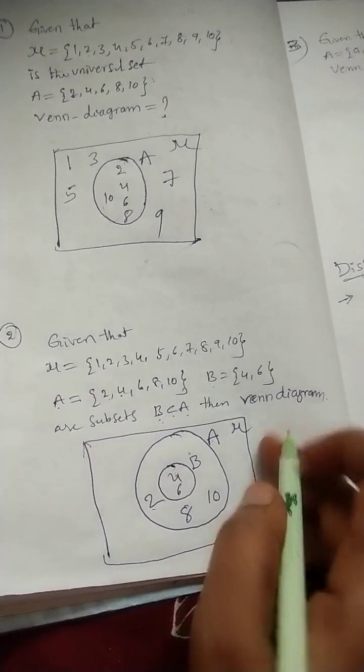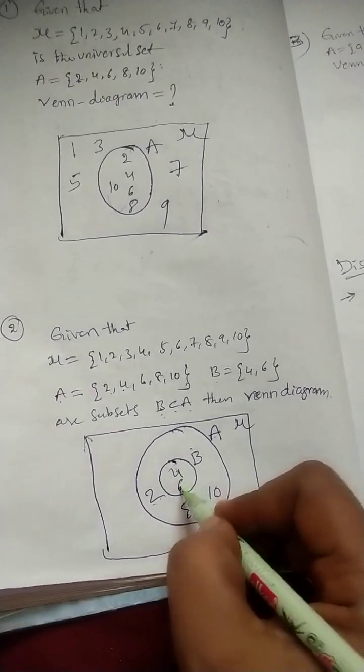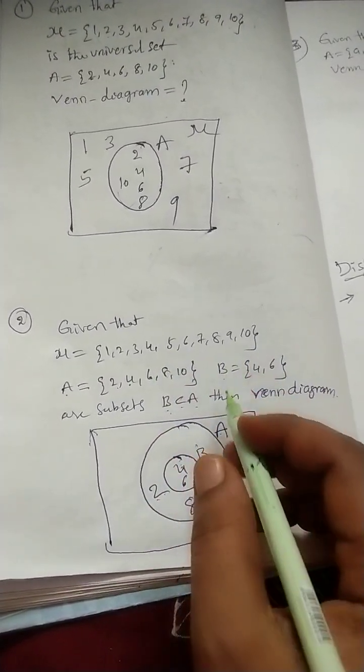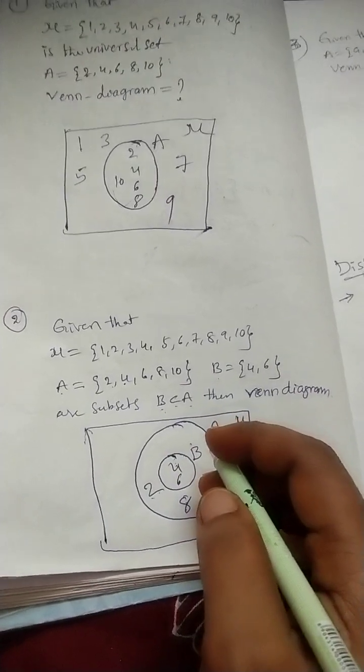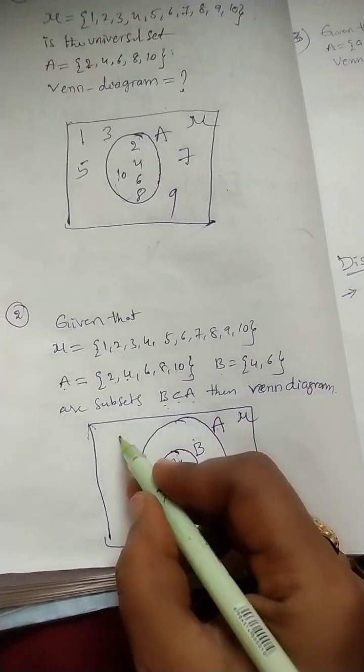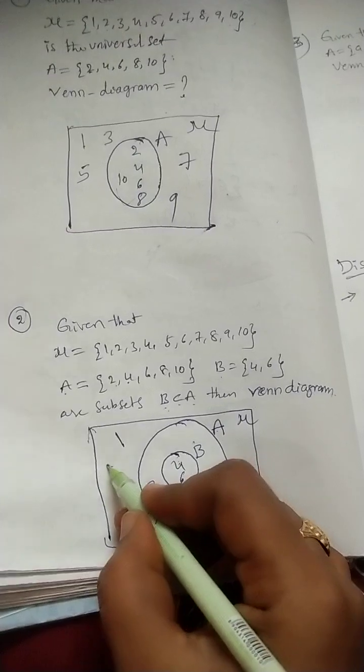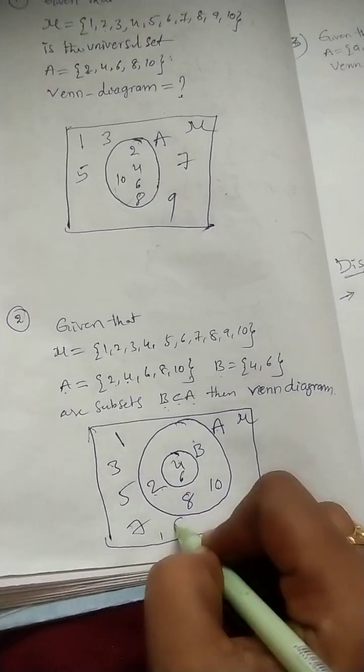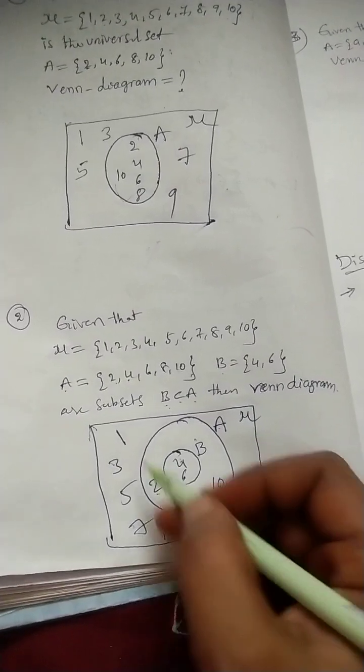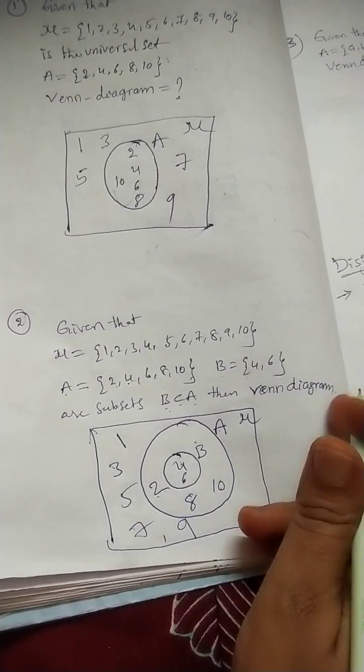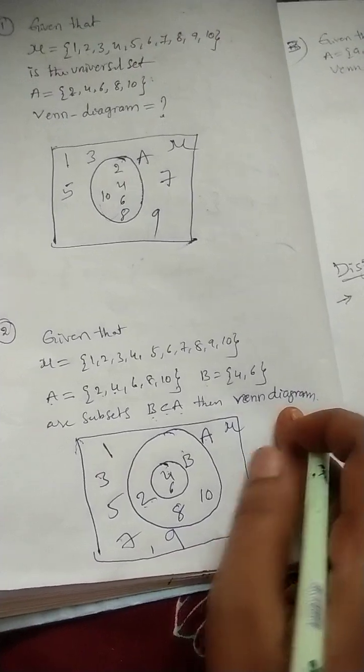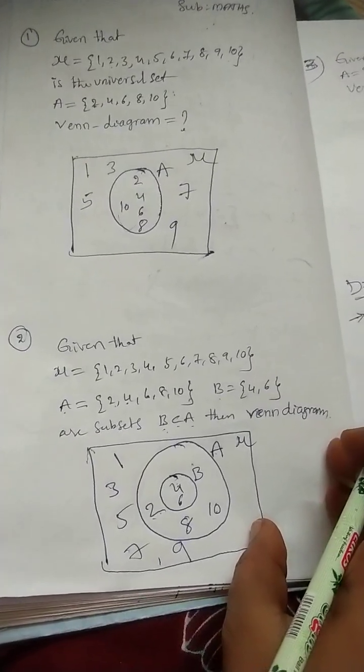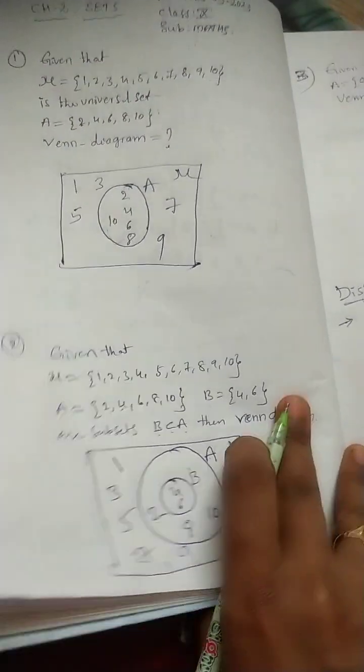So, 2, 8, 10 in the set A. Set B already there, 4 and 6. So, total together in set A. Next, here, 2, 4, 6, 8, 10 over now. Remaining numbers from the universal set, we can write in the universal set. 1, 3, 5, 7, 9. These are the remaining numbers in the universal set. I hope you understand.